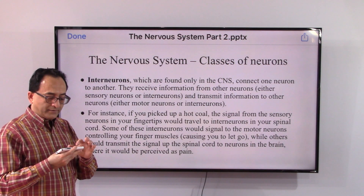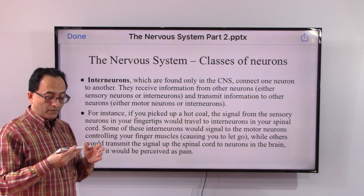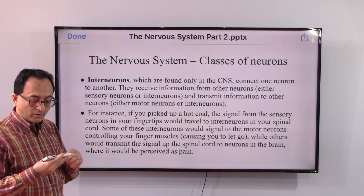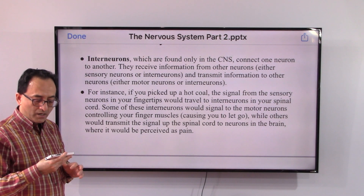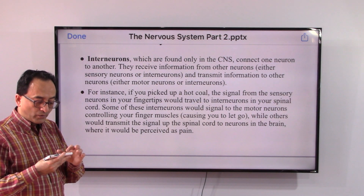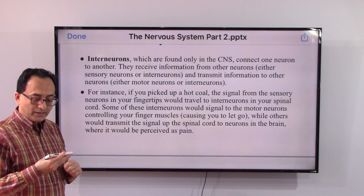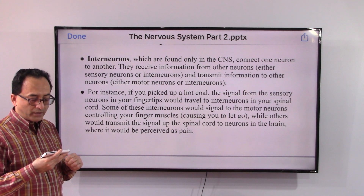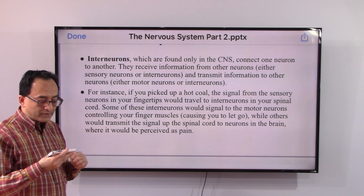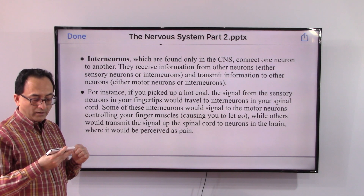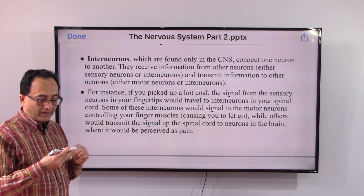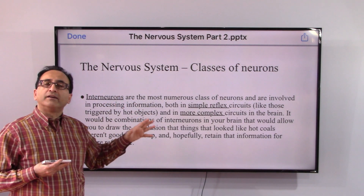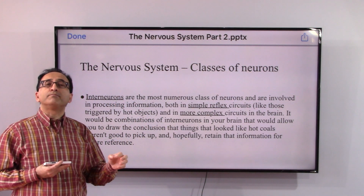Interneurons are found only in the central nervous system and connect one neuron to another. They receive information from other neurons — either sensory neurons or other interneurons — and transmit info to motor neurons or other interneurons. For instance, if you picked up a hot coal, the signal from the sensory neurons in your fingertips would travel to interneurons in your spinal cord. Some would signal motor neurons to release the object, while others would transmit the signal up to the brain where it would be perceived as pain.